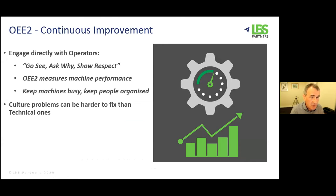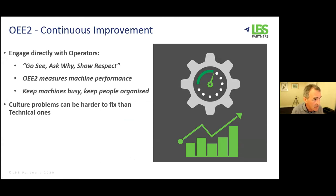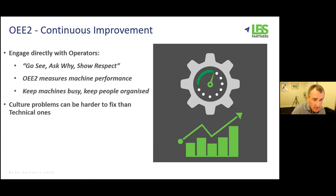In terms of culture, I don't believe it's really possible to sustain OEE improvements without involving the operators. This is cross-functional — we need quality, maintenance, engineers, operators, and team leaders all looking at this the same way. The operators are key. There's an old phrase in lean terminology: go see, ask why, show respect. OEE measures machine performance — we're not interested in measuring time operators are away on breaks; we just want to measure machine performance. Keep the machines busy, but keep people organized. Sometimes cultural issues are harder to fix than technical ones.